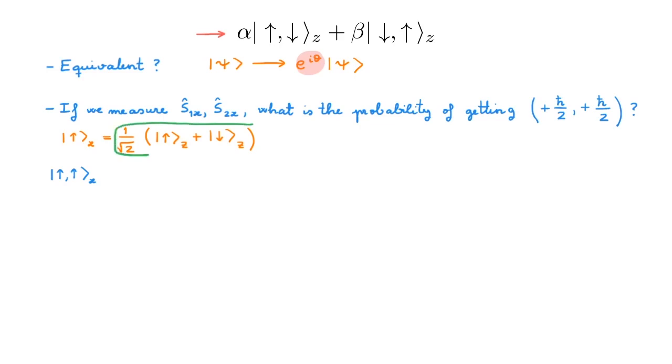Plugging in the expression here for a single particle up state in the Sz basis, we obtain the tensor product of this first term with this second term. And multiplying together these two terms of the tensor product,